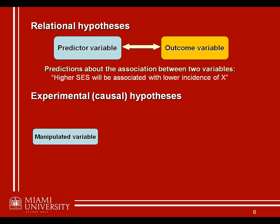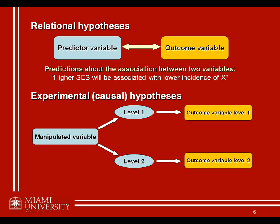Whereas an experimental or causal hypothesis manipulates some variable at at least two different levels. So what we might have is a situation where people have control and don't have control — two different levels of some manipulated variable — and then what we do is measure the outcome variable associated with each of those different levels. When people have control over the situation, what sort of satisfaction do they report? And when people don't have control, what sort of satisfaction do they report? We're interested in comparing the outcome variable levels produced at each of the different levels that we've manipulated.